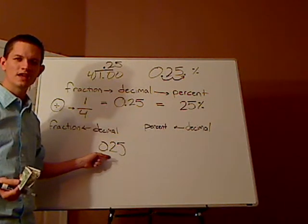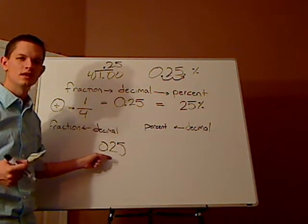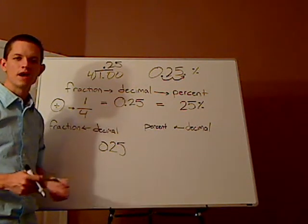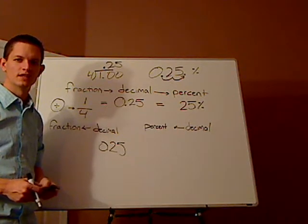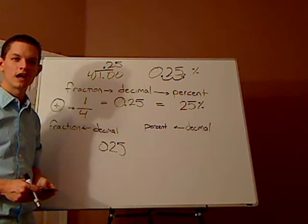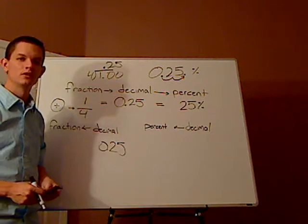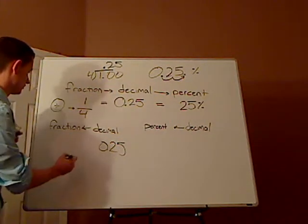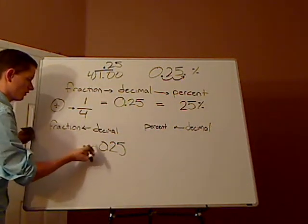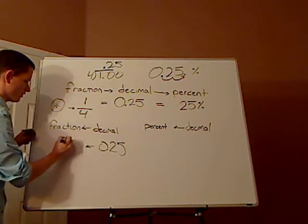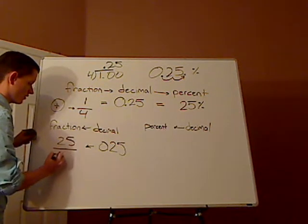You know, in mathematical terms, we would say 0.25 hundredths. So guess how you convert this to a fraction? You just put it over 100.